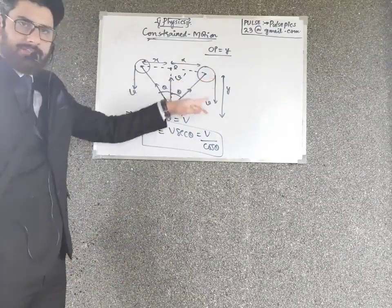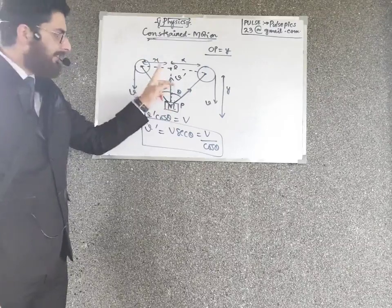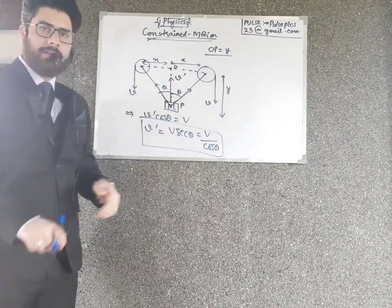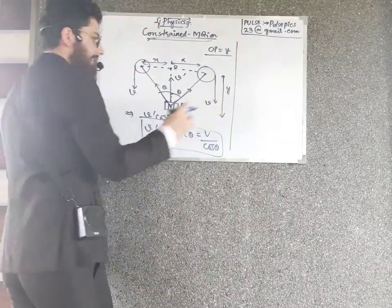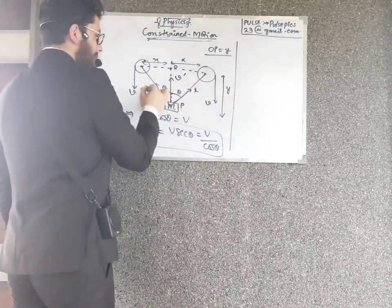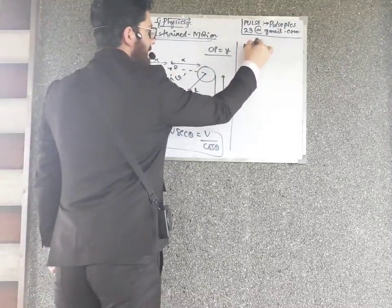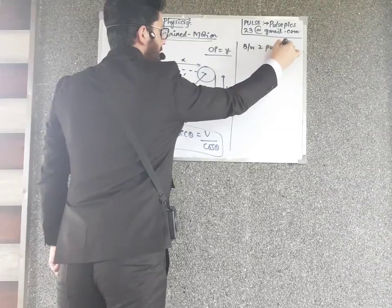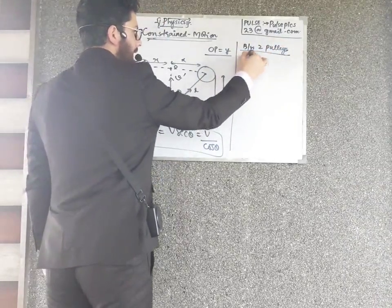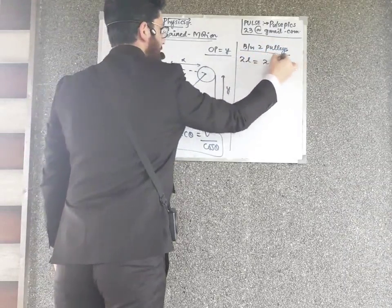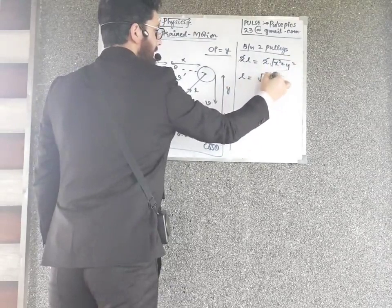I have another solution using differentiation. If the string connects two points and the length L equals the square root of x-squared plus y-squared, then 2L equals x-squared plus y-squared — wait, L equals the root of x-squared plus y-squared. I will differentiate both sides: dL/dt equals the derivative of root of x-squared plus y-squared.